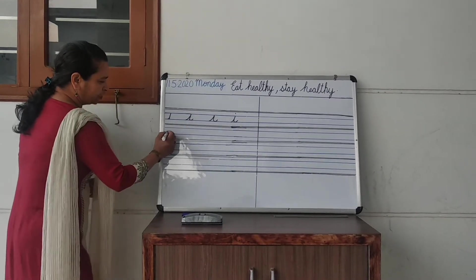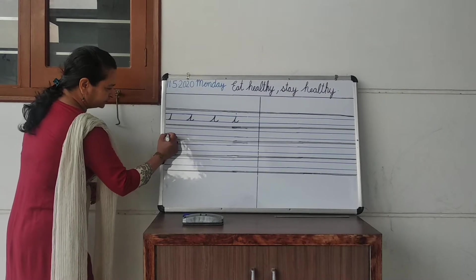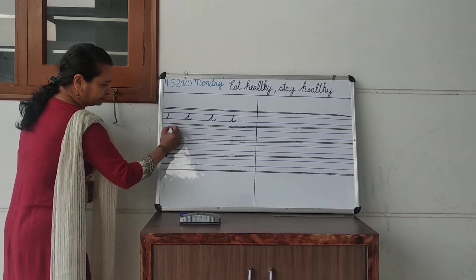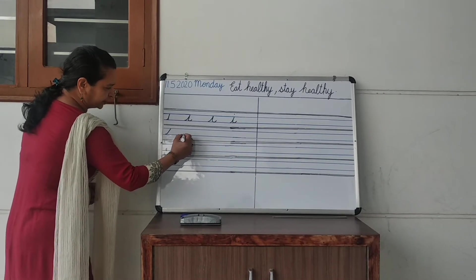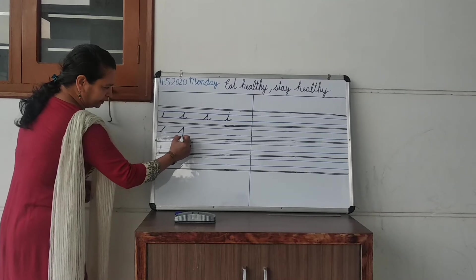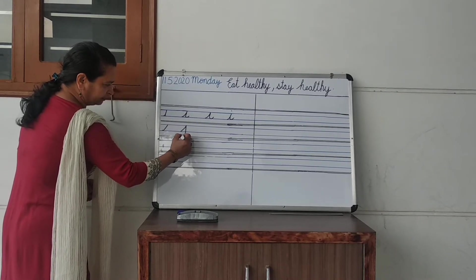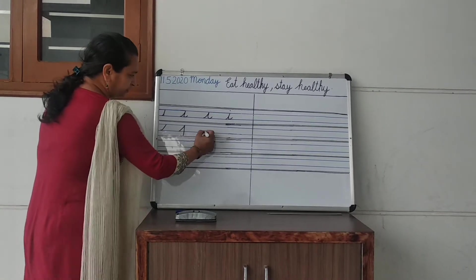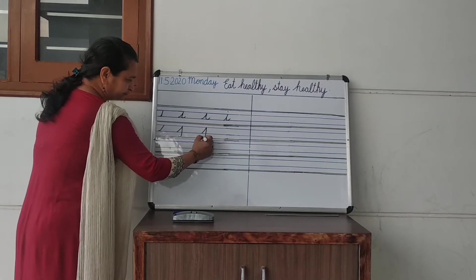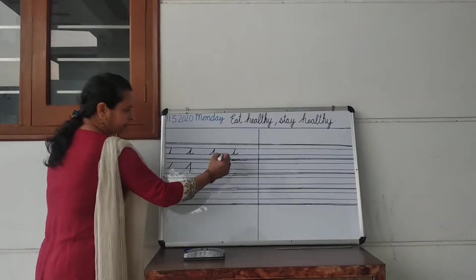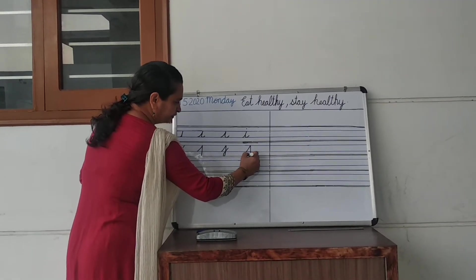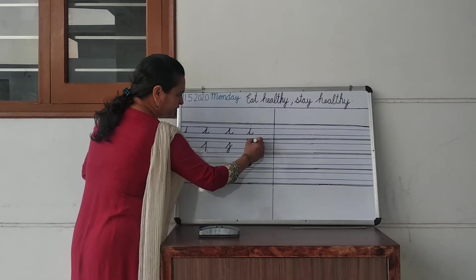Now come to j. Small j starts from the second blue line. First step, second step: come back on the red line and make a turn — that's the third step. Fourth step: come back on the same line and put a dot. That's j.